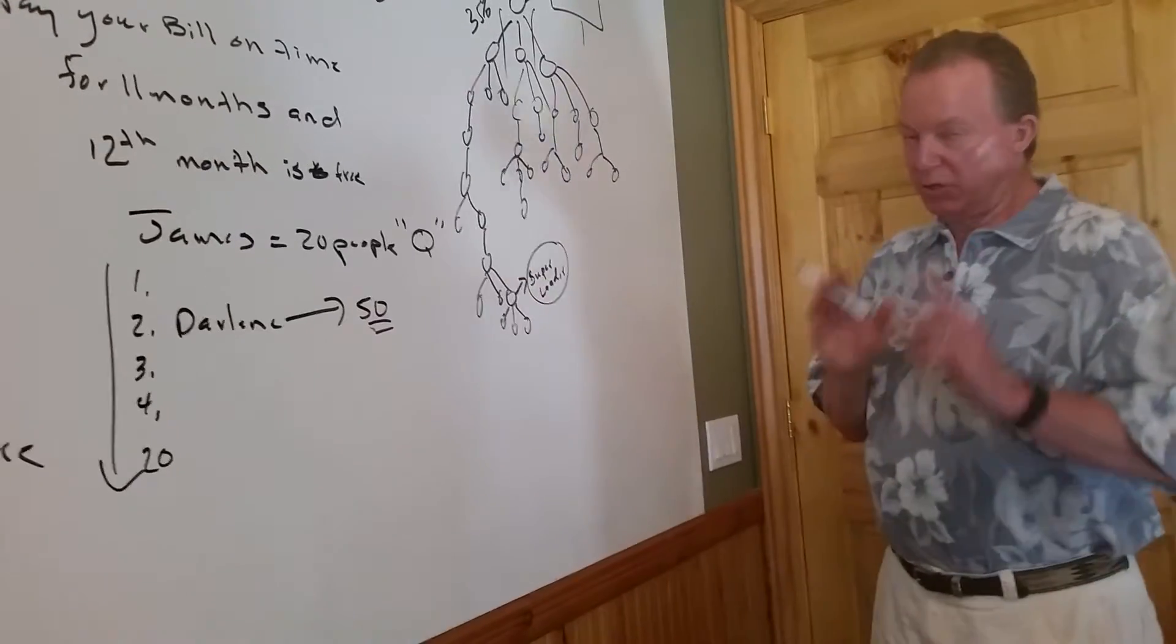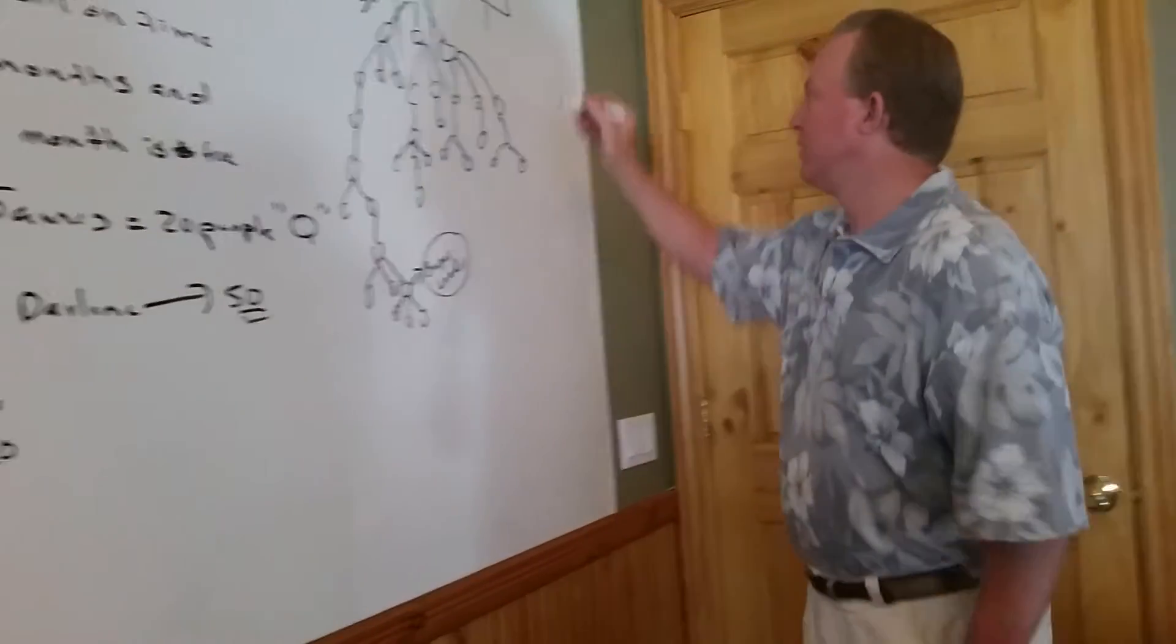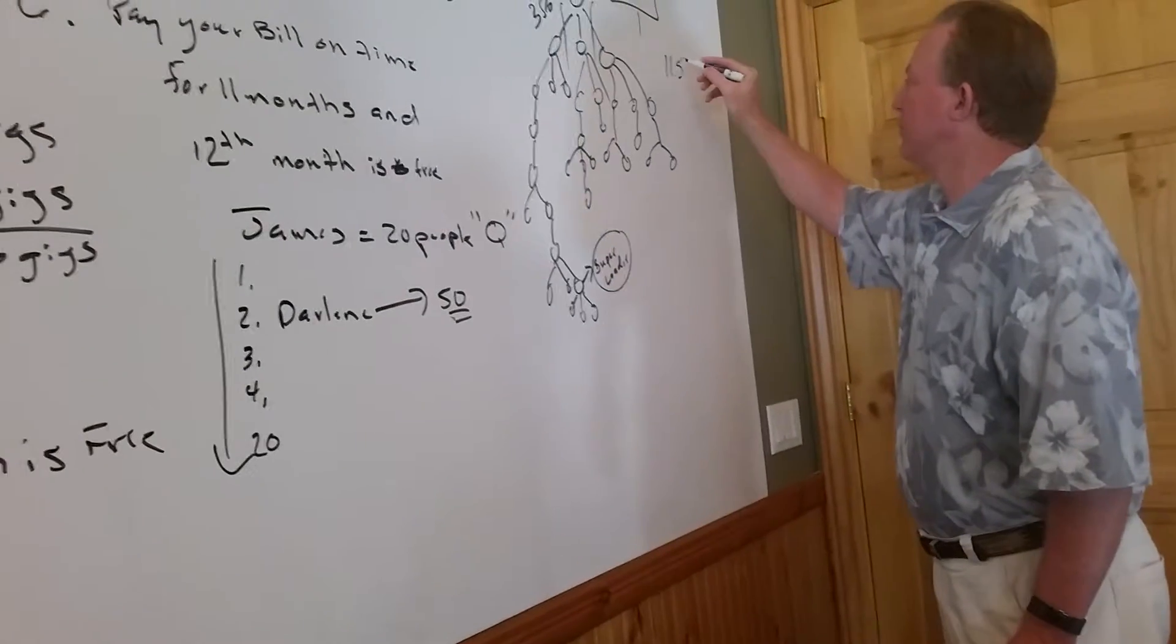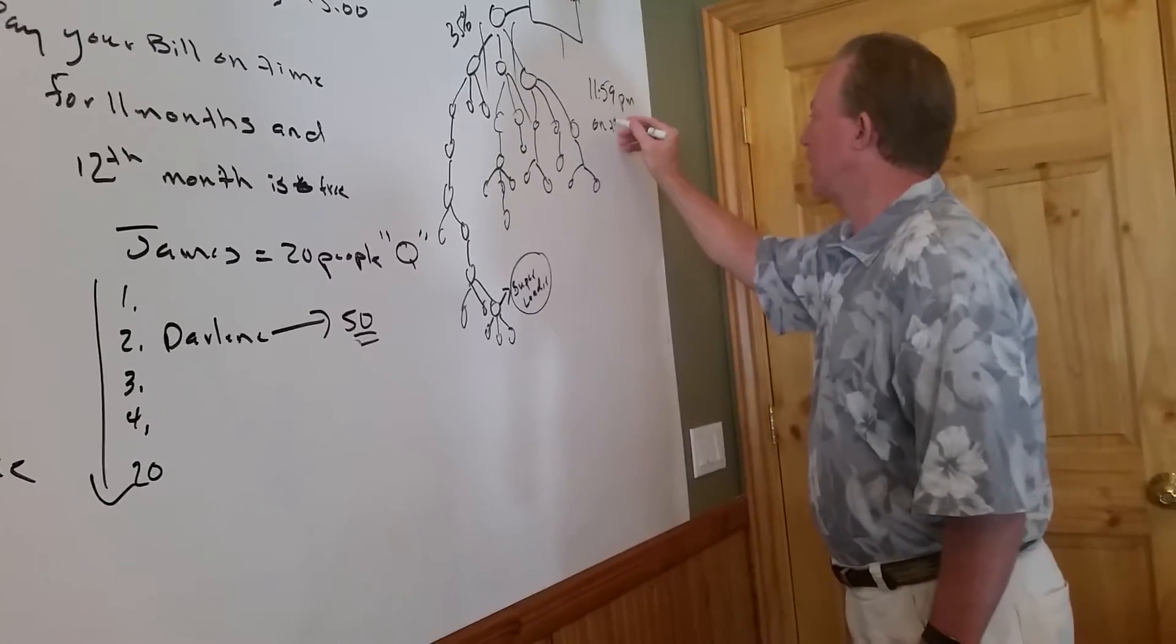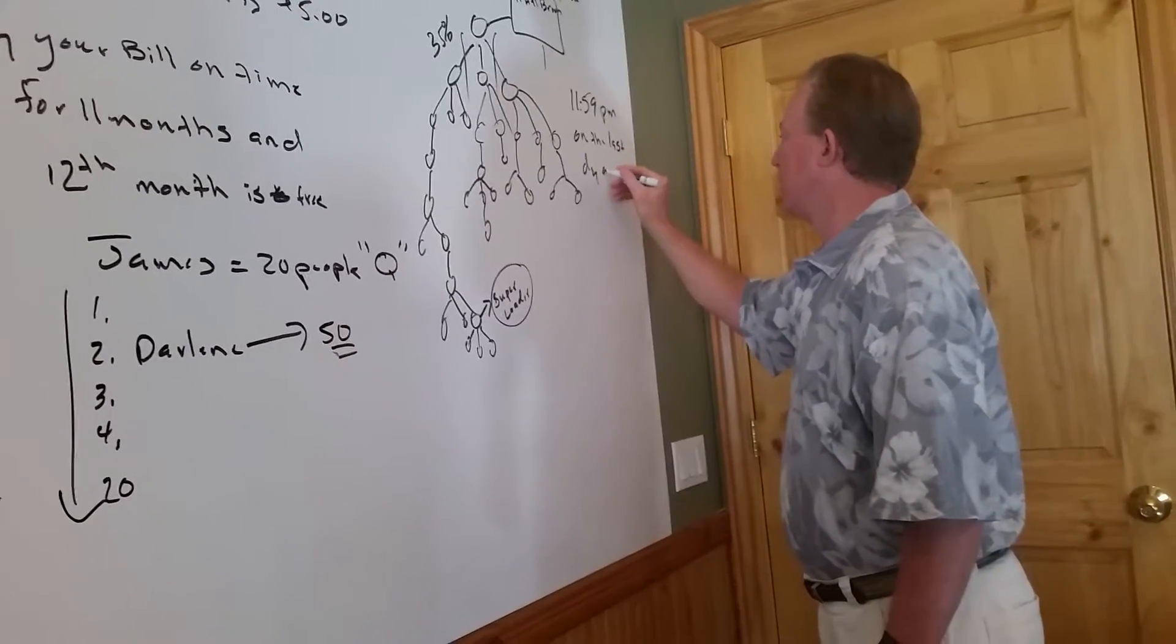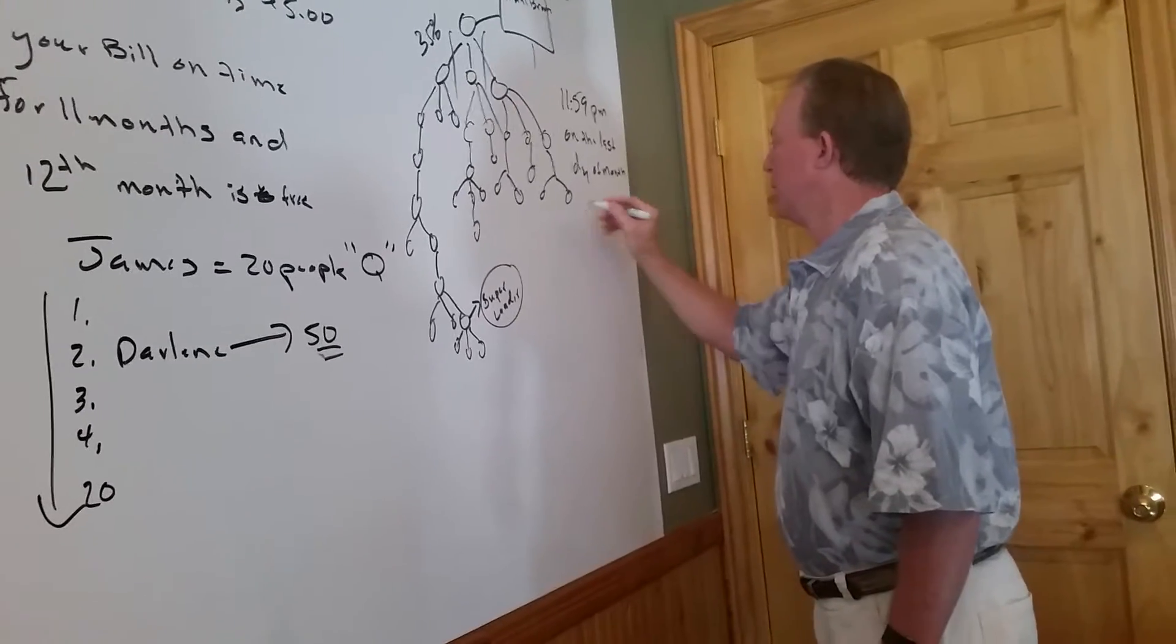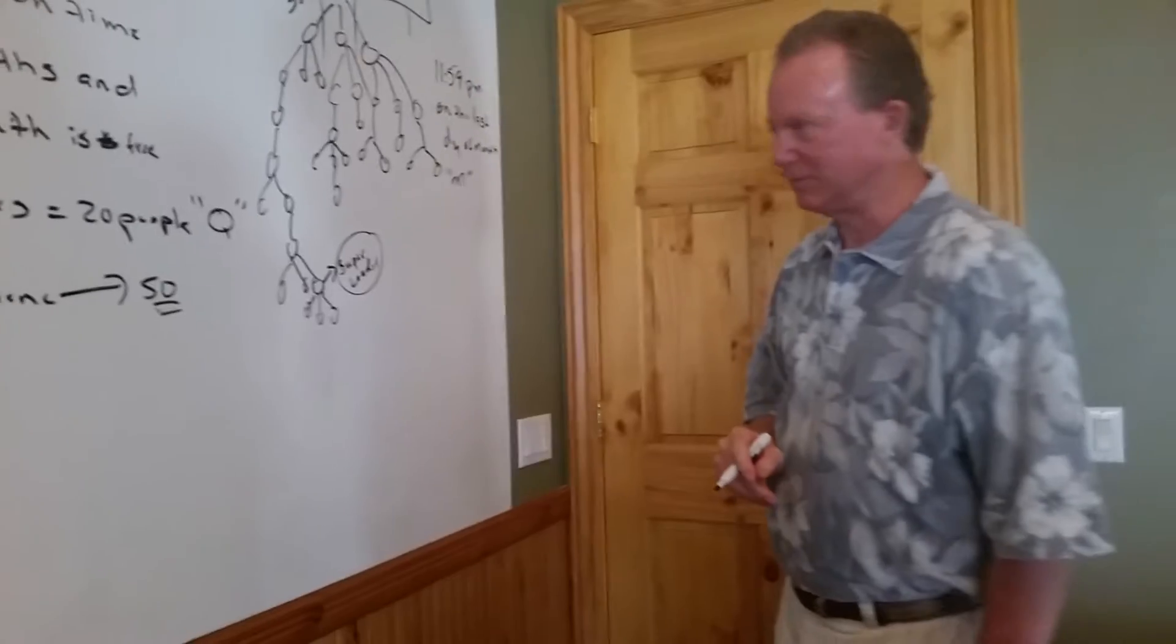And you have 30 days of doing it? No. You have until 11:59 PM on the last day of the month. And whose time is 11:59? Mountain time. Mountain time.